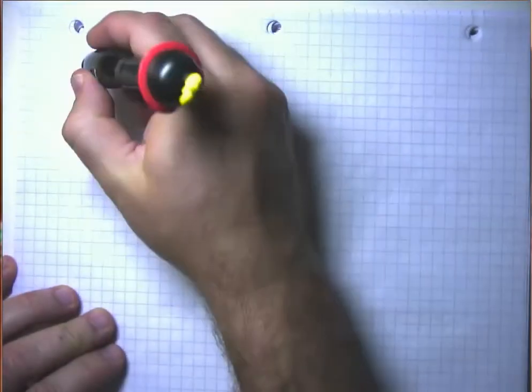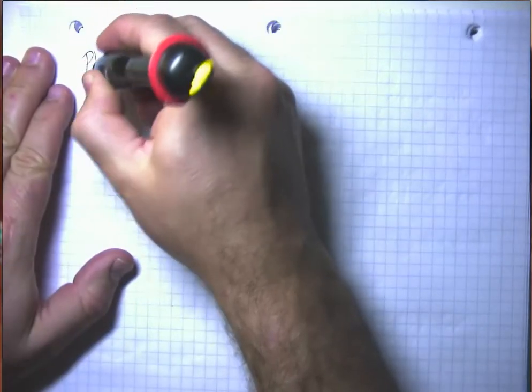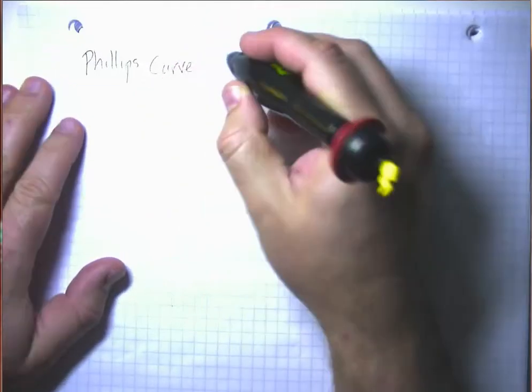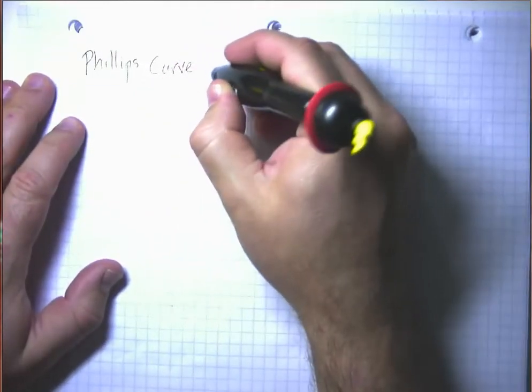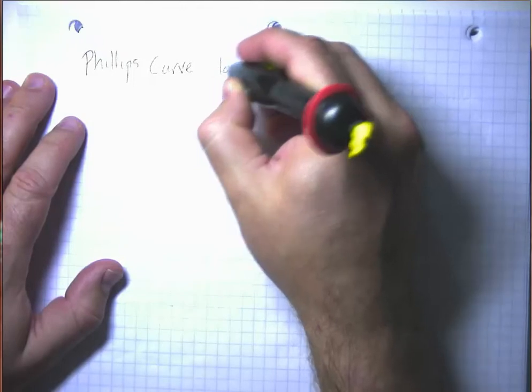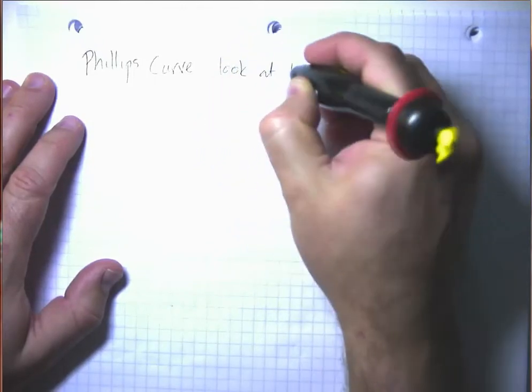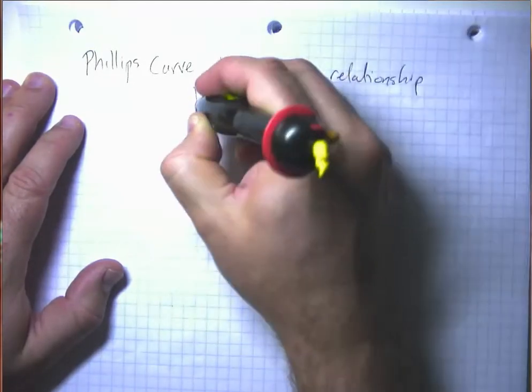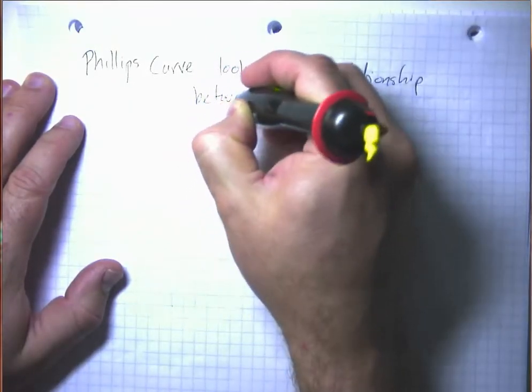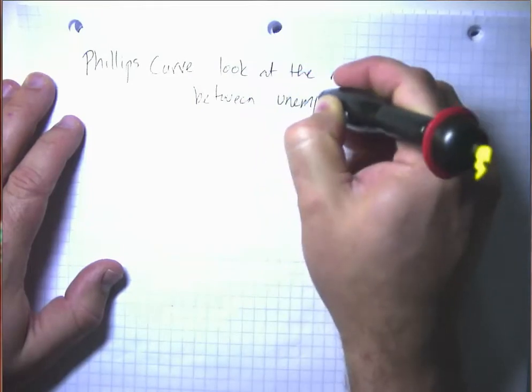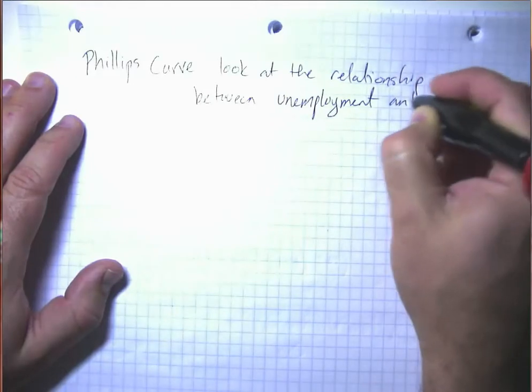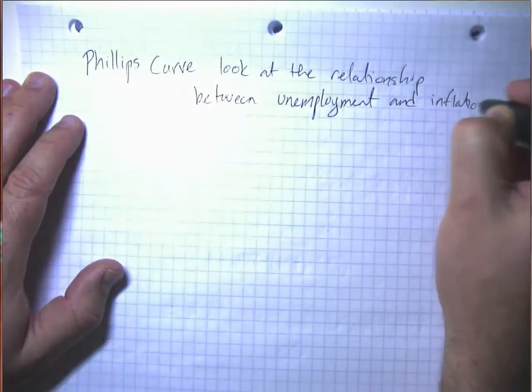Okay, in this series of video lectures, we're going to talk about what's called the Phillips Curve. And the Phillips Curve is something that economists use to look at the relationship between unemployment and inflation because those are two things that people care about a lot.